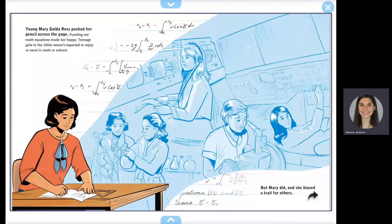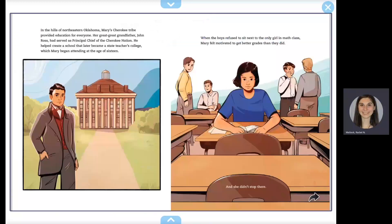Young Mary Golda Ross pushed her pencil across the page. Puzzling out math equations made her happy. Teenage girls in the 1920s weren't expected to enjoy or excel in math or science, but Mary did, and she blazed a trail for others.